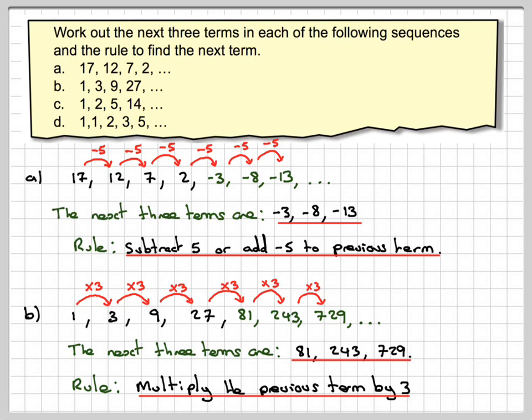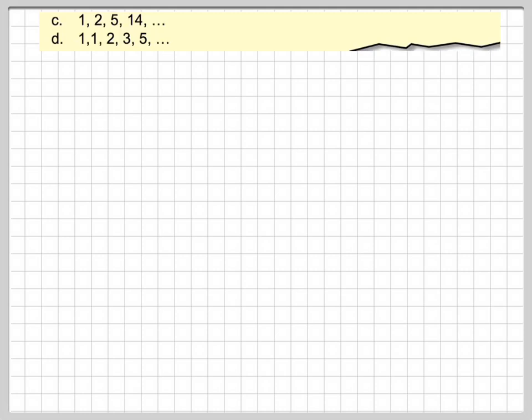Now, if I need to find the hundredth term of these sequences, I'm not going to keep on doing this process. I'd need to come up with another rule. This rule only tells me what to do to the previous term. Part c is a little bit more difficult.